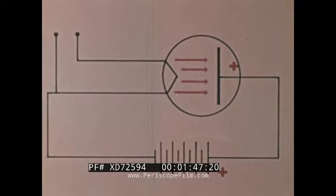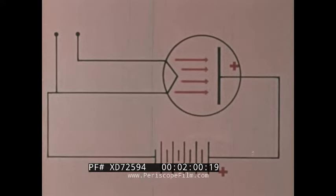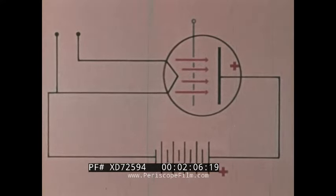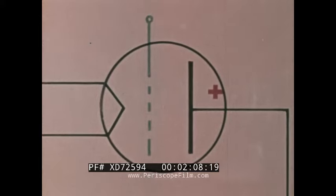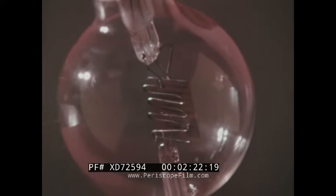Lee DeForest in the United States connected a battery between the plate and the filament so that the plate had a positive charge. This attracted more electrons from the space charge and increased the current flow to the plate. DeForest's next step was to add a grid of fine wire between the filament and the plate. He found that a small variation of the voltage on the grid, because of its close proximity to the filament, caused a great change in the current to the plate, and the tube became a control device. The work of many men has given us the variety of vacuum tubes used today to control or increase the flow of electrons.